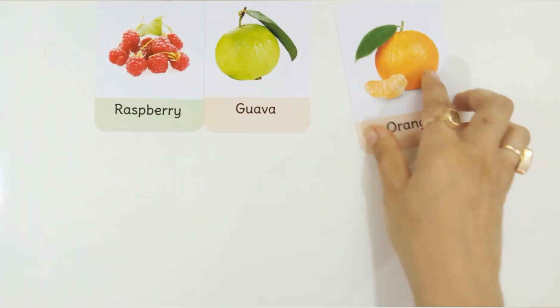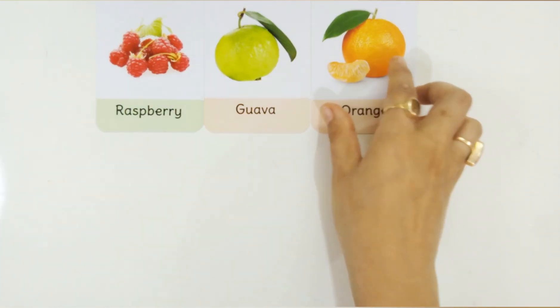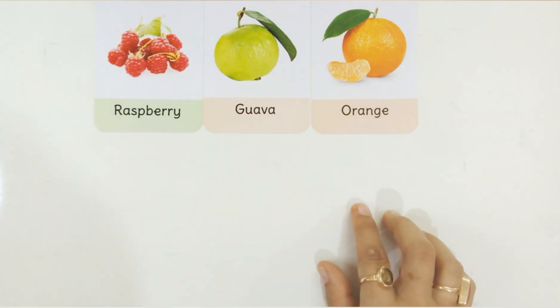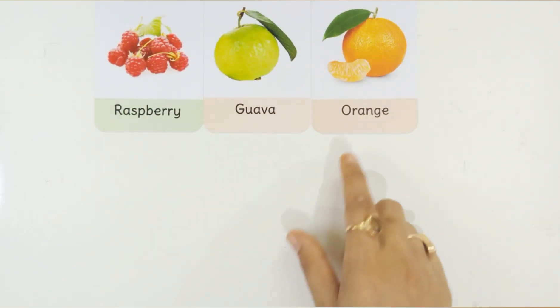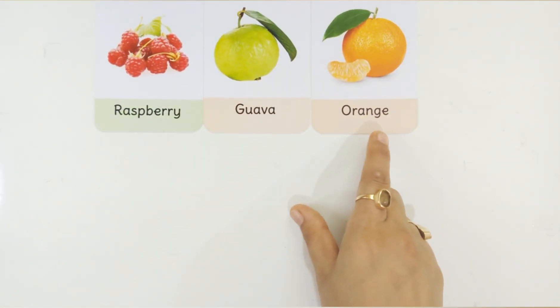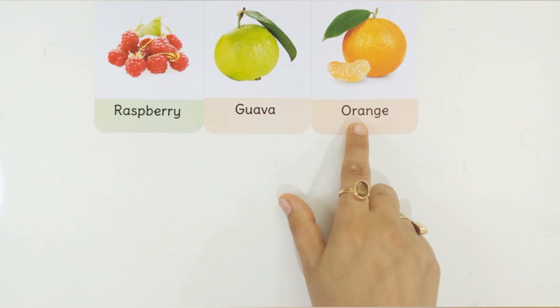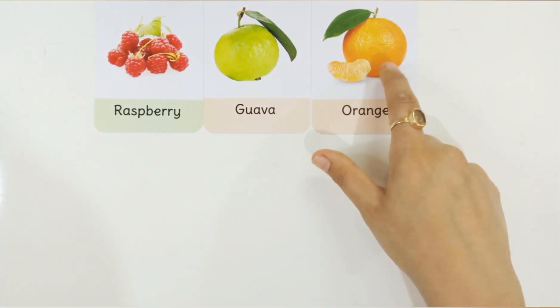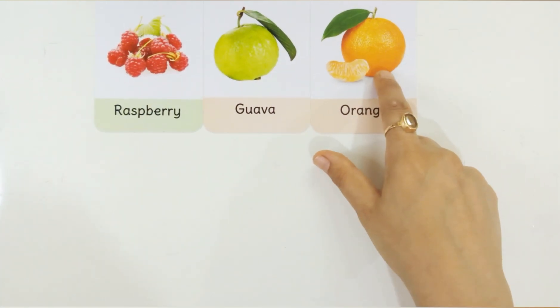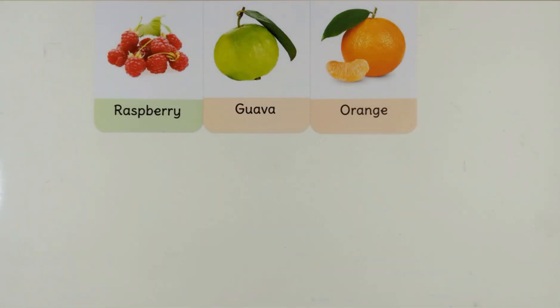O for Orange. O-R-A-N-G-E, Orange. This is Orange. Orange is a fruit.